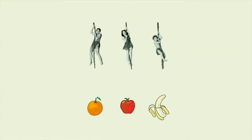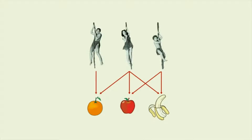One possible relation between these people and fruit would be that certain people in set A like certain fruit in set B. For instance, let's say that Tarzan likes oranges, Boy likes apples and bananas, and Jane likes oranges, apples, and bananas. Instead of drawing multiple arrows from a single person, we could represent this relation by a collection of individual arrows, each connecting one person to one fruit.